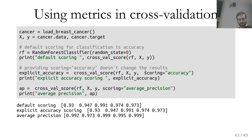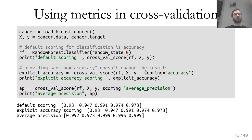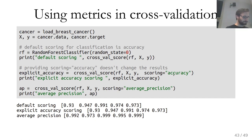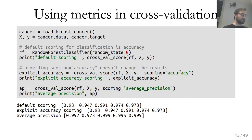Finally, these metrics can be used in cross-validation and grid search. The easiest way is to set scoring equal to a string in cross_val_score or GridSearchCV. Without doing that, it uses the default scoring — accuracy for classification, R-squared for regression. You can specify scoring='accuracy' explicitly, or use other metric names to change the optimization target.